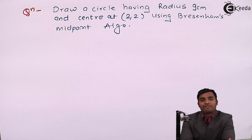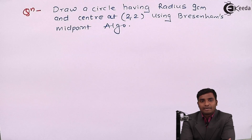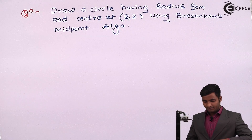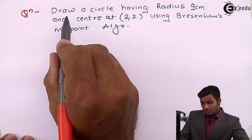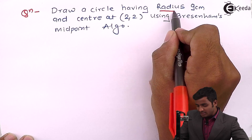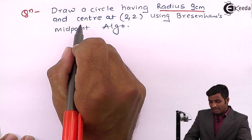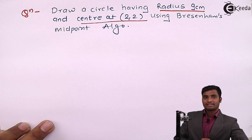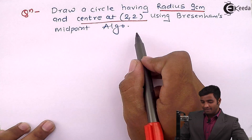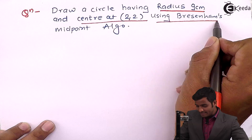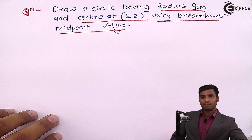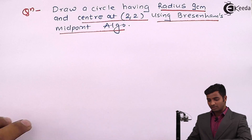Hello friends, in this video we will solve problems based on Bressenheim's midpoint algorithm to draw a circle. Here is the problem: draw a circle having radius 9 centimeter and center at (2, 2). We have to draw a circle using Bressenheim's midpoint algorithm.